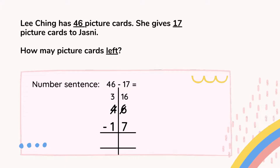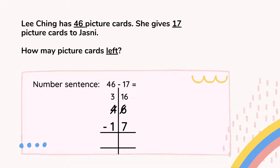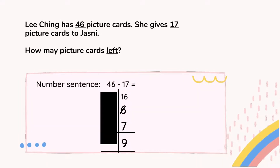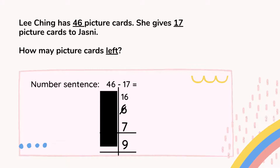Now this is the subtraction equation. We need to find the answer. We have to look at place value ones: 6 minus 7. Six is the small number, 7 is the bigger number — not enough. So we have to do the borrowing, as I show you on this page. We cancel number 4 to become number 3, and number 6 becomes 16.